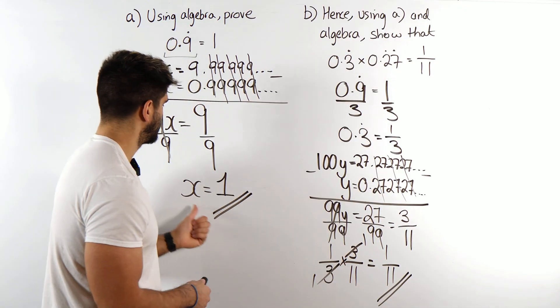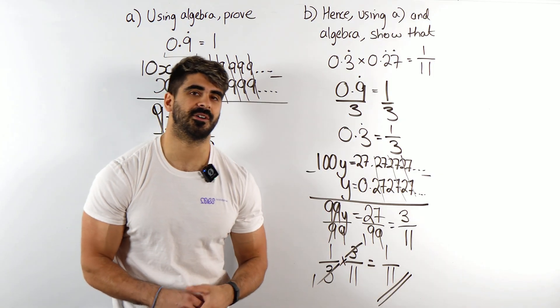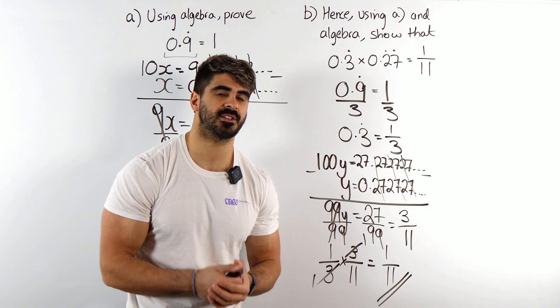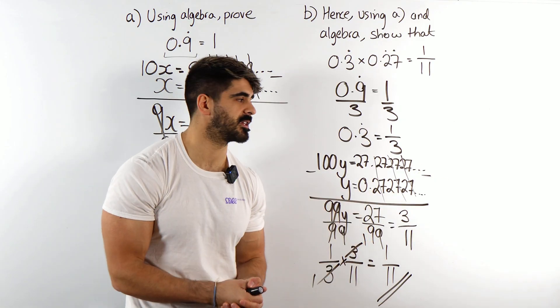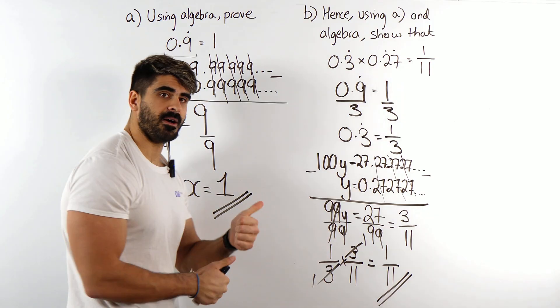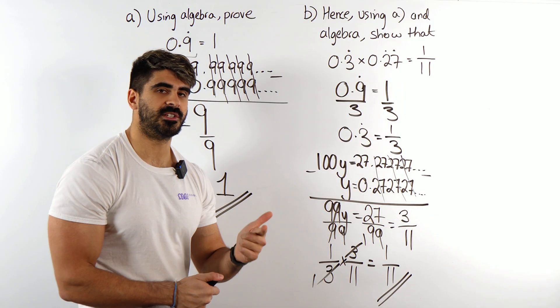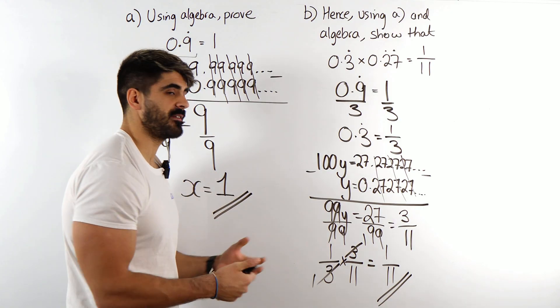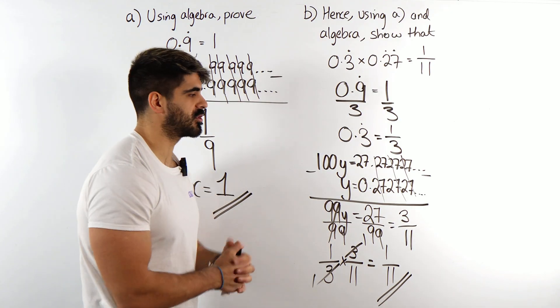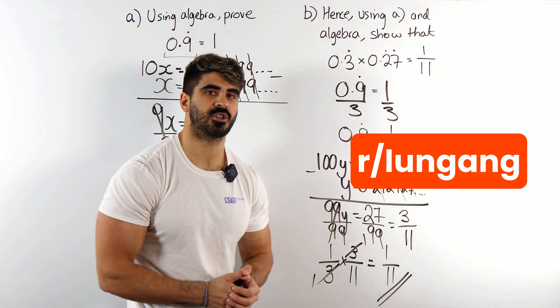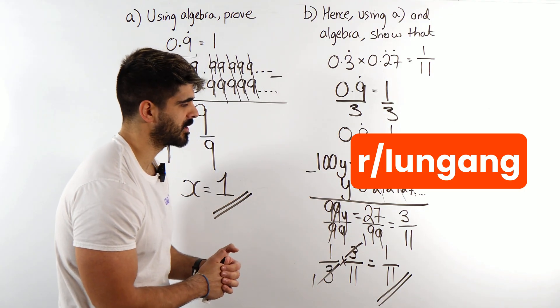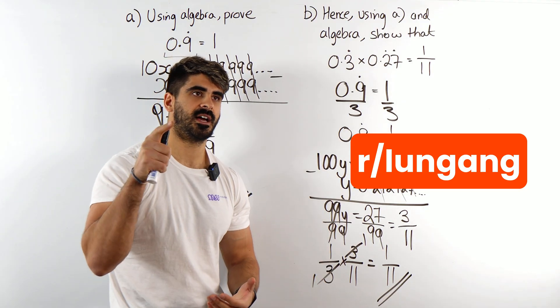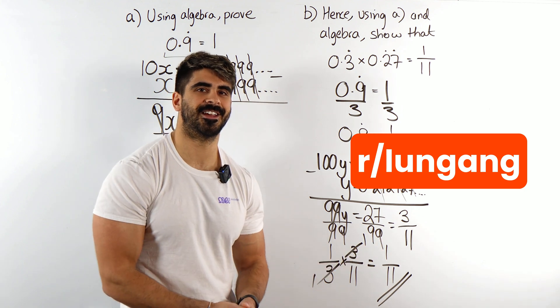So guys, if you learned something today, especially like 0.9 recurring is equal to 1. There's no number that fits between 0.9 recurring and the number 1. Hit the like button. Subscribe for more GCSE mass content like this. If you have any suggestions, you can head over to my Lungang Reddit and post your questions over there. We're going to try and build a community over there, especially when it comes to exam season. So yeah, head over to Lungang and I'll see you guys in the next video.